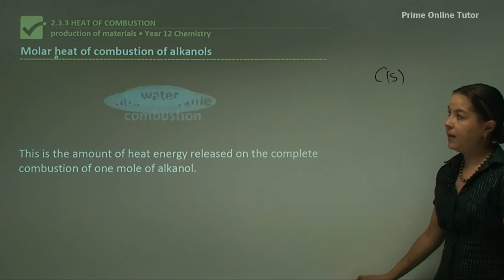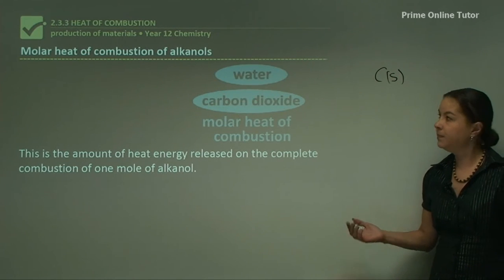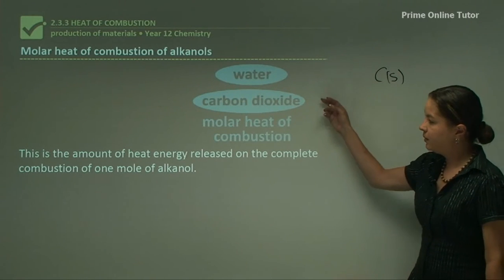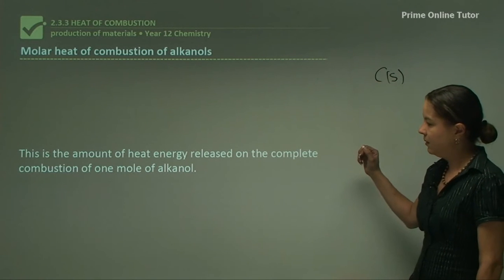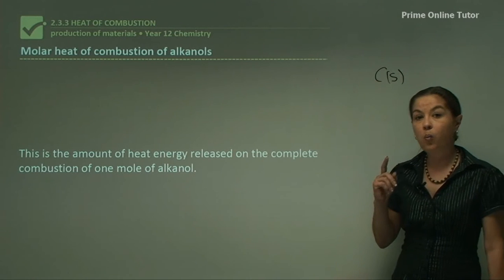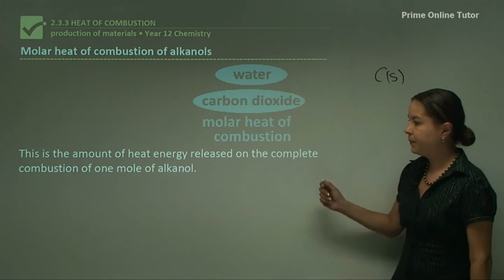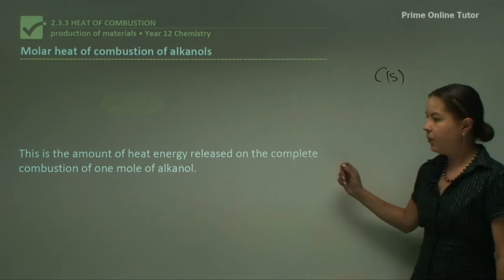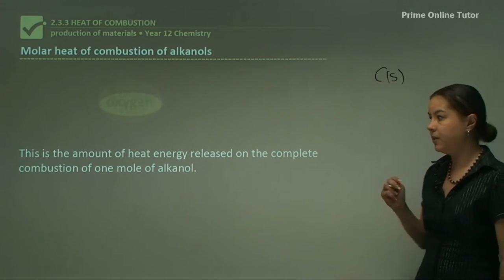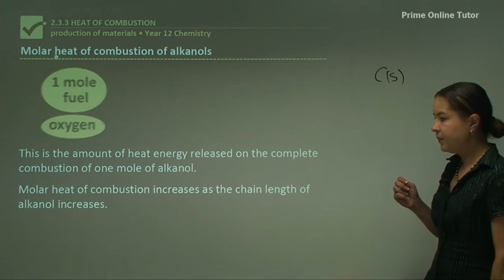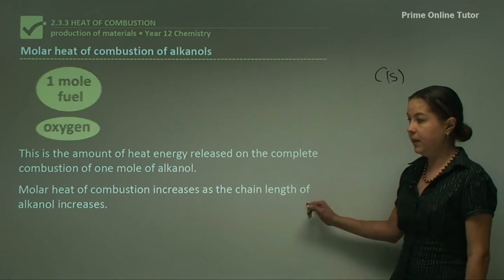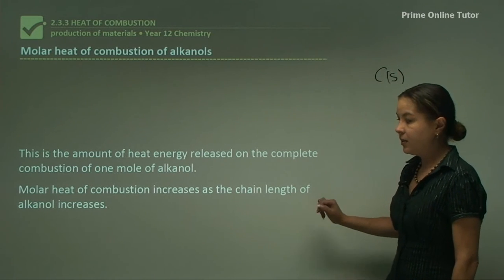The molar heat of combustion is the amount of heat energy released on the complete combustion of one mole of alcohol or alkanol — the terms are interchangeable. One mole of fuel with oxygen produces water and carbon dioxide. The molar heat of combustion increases as the chain length of the alkanol increases, so shorter chains like methanol and ethanol have a lower molar heat of combustion than longer chains such as pentanol or octanol.